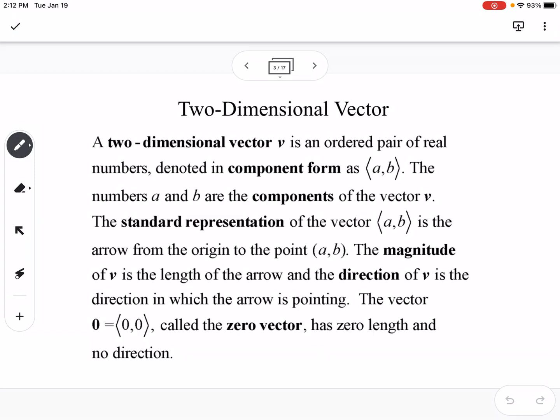A two-dimensional vector v is an ordered pair of real numbers, denoted in component form as (a,b). The numbers a and b are the components of the vector v. The standard representation of the vector (a,b) is the arrow from the origin to the point (a,b). The magnitude of v is the length of the arrow, and the direction of v is the direction in which the arrow is pointing. The vector 0 = (0,0), called the zero vector, has zero length and no direction.